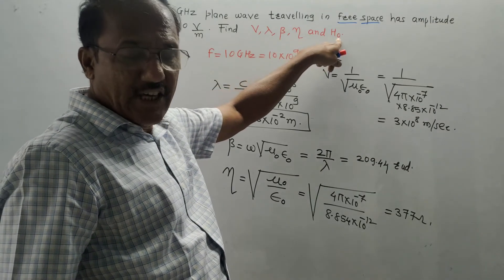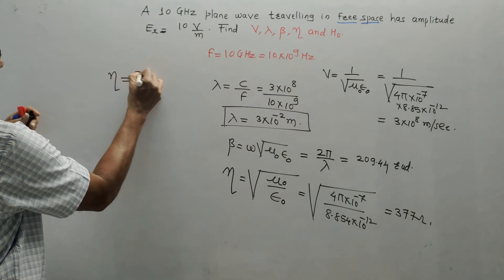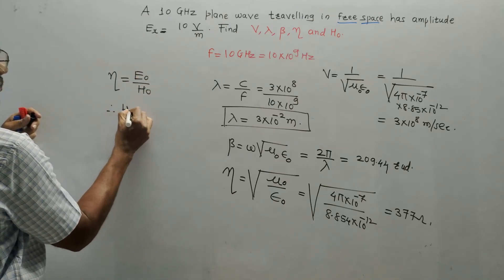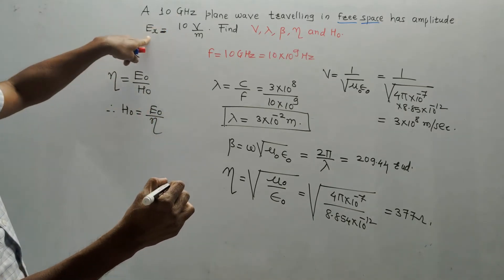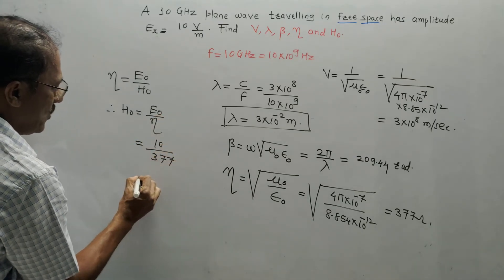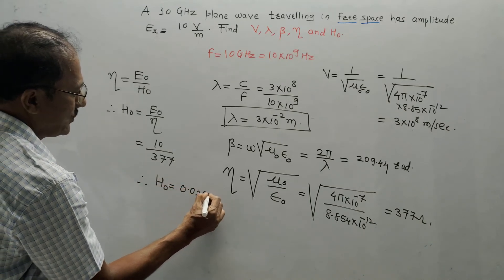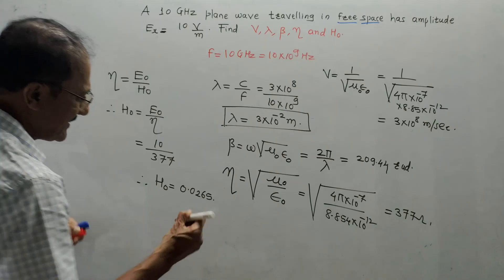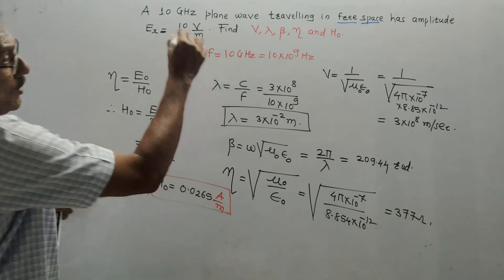Now the last part is H_0, the amplitude of H-bar. We know the basic relation: eta equals E_0 upon H_0, therefore H_0 equals E_0 upon eta. E_0 is given as E_x which is 10, so it is 10 upon 377. Solving this, the value of H_0 is 0.0265 amperes per meter.